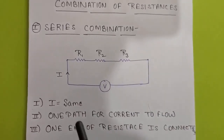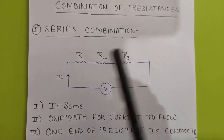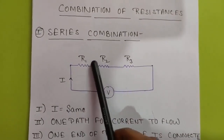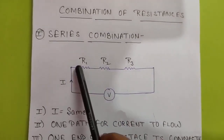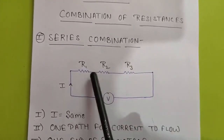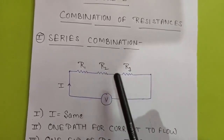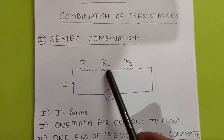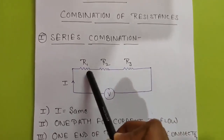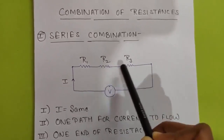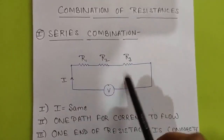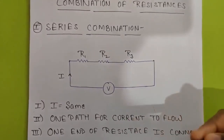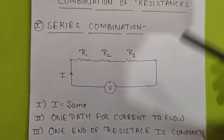Third and last point: one end of the resistance is connected with the other. See here clearly — this is one end of R1 and this is one end of R2, and they are connected to each other. The second end of R1 is not connected to R2, meaning only one end of the resistance is connected. Similarly for R2 and R3, only one end of the resistances are connected. Such a combination, when one end of a resistance is connected to the other end of another resistance, is called a series combination. In this circuit all three conditions are satisfied, but if any one of these points is satisfied, it is also a series combination.